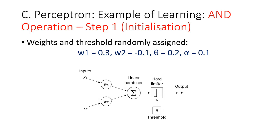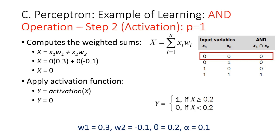Step 1 is initialization, and the values are randomly assigned as follows: weight 1 is 0.3, weight 2 is negative 0.1, theta or threshold is 0.2, and the learning rate is 0.1. Step 2 is activation, where the values of X and Y are calculated.